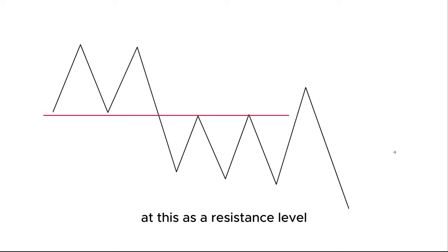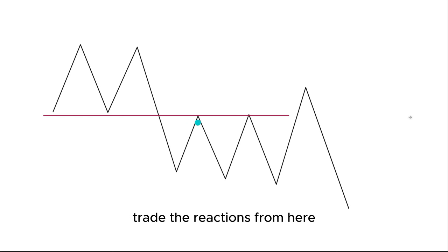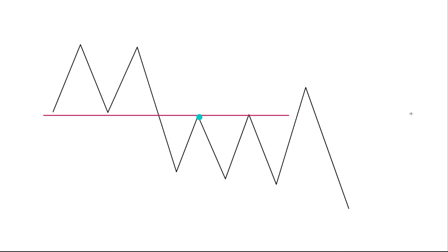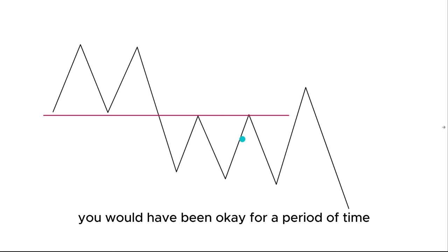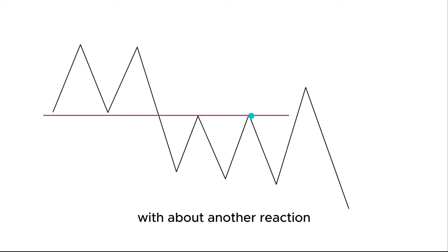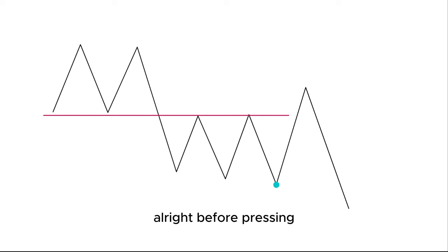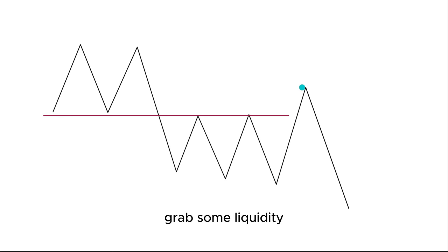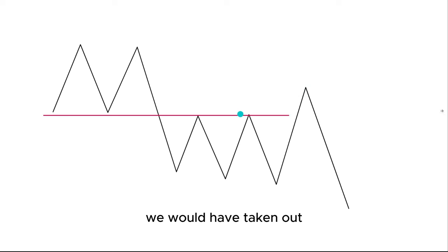When this fails and price breaks through, support and resistance traders would then be looking at this as a resistance level, looking to trade reactions from here. As you can see, if you were trading a short here, you would have been okay for a period of time — there would have been another reaction, probably breaking even, and a further push before price ultimately pushes up to grab some liquidity. This liquidity is fuel; stop losses would have been taken out at this point before price pushes further down in the intended direction.